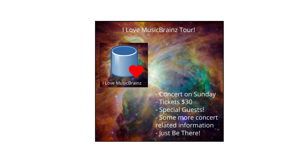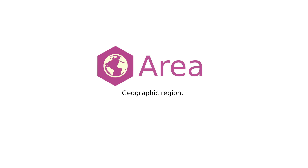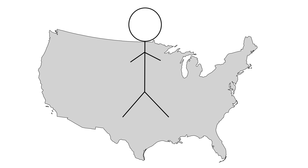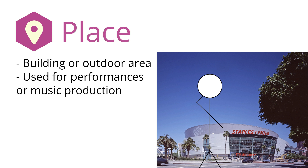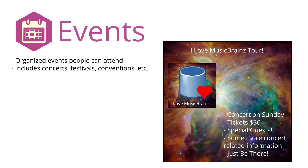Seeing the album get so popular inspires us to go on a concert tour, so we look at certain areas we might want to hold concerts. Area just means a geographic region — a broad term that includes cities, municipalities, states or provinces, and countries. Next, we pick our venue in certain cities. For example, in Los Angeles we might decide to perform at the Staples Center. This would be a place, which is a building or another area used for performances or music production. And finally, we can host an event, which refers to an organized event that people can attend — whether concerts, festivals, conventions, or any other type of event.